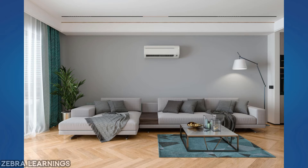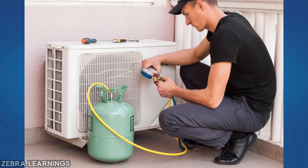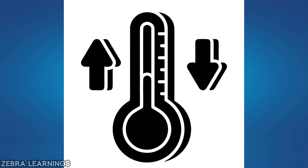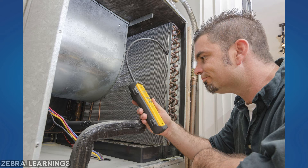There are many reasons for the refrigerant level in an AC unit to decrease. For example, the refrigerant may have been undercharged, or the refrigerant level may have decreased due to temperature fluctuation. But most of the reason is refrigerant leak.